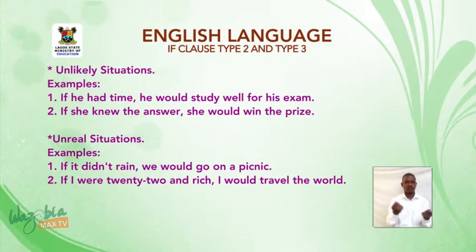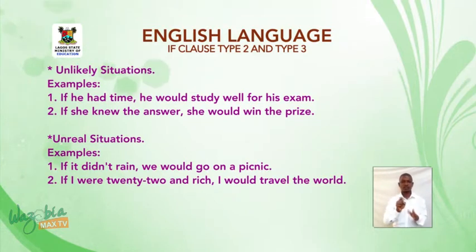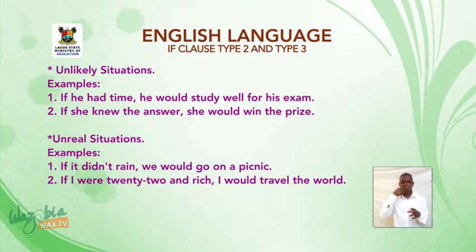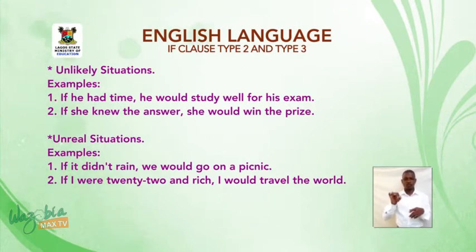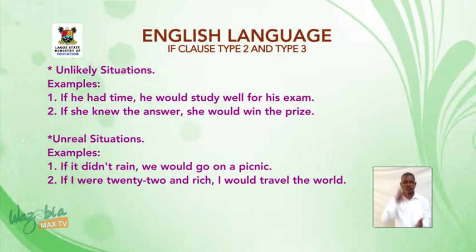Third, unreal situations. Examples: One, if it didn't rain, we would go on a picnic. Two, if I were 22 and rich, I would travel the world.